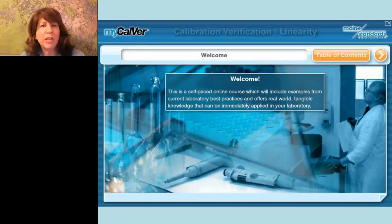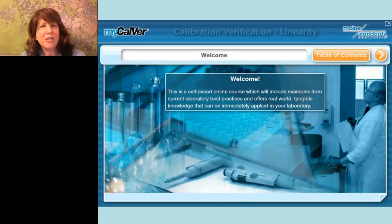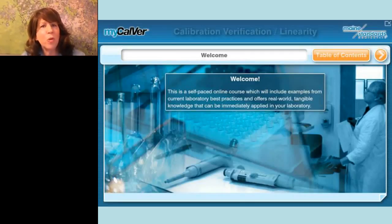Maine Standards offers test kits for over 80 analytes including general chemistries, urine chemistries, enzymes, lipids, therapeutic drugs, cardiac markers, thyroids, serum proteins, vitamin D, prostate specific antigen, and ferritin. Personnel at Maine Standards Company are dedicated to providing the highest quality materials and the best customer service in the industry. Their goal is to help clinical laboratories easily validate and maximize reportable ranges while minimizing manual dilutions. For further information, please visit www.mainestandards.com.